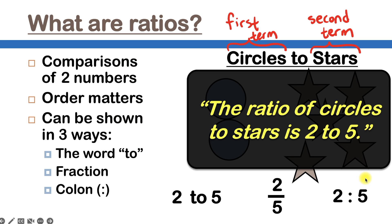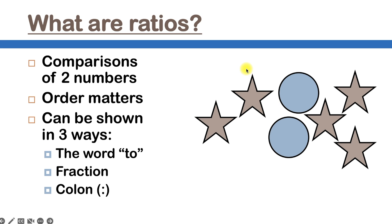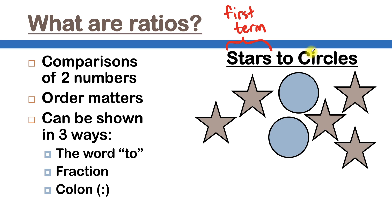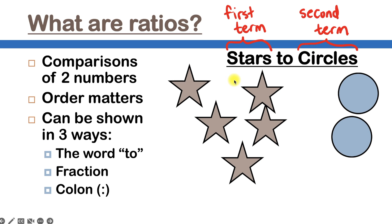Let's take a look at our next example. This time we're talking about the ratio of stars to circles. Our first term here is the number of stars, and the second term is our number of circles. Let's rearrange these shapes so that it's easier to see. How many stars do you see? I see five. So since we're talking about stars and there are five of them, that'll be the first number in our ratio. Then we'll write the word 'to,' and then we'll talk about our second term — the number of circles — which is two. So I'll write two as the second term of my ratio. Since we're talking about the ratio of stars to circles, we would say the ratio of stars to circles is five to two.